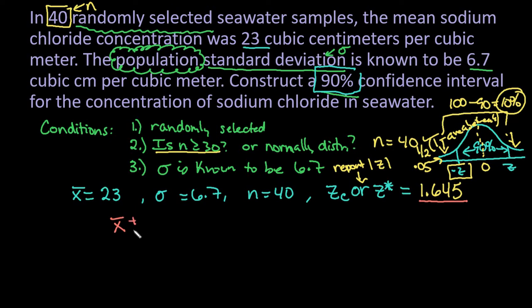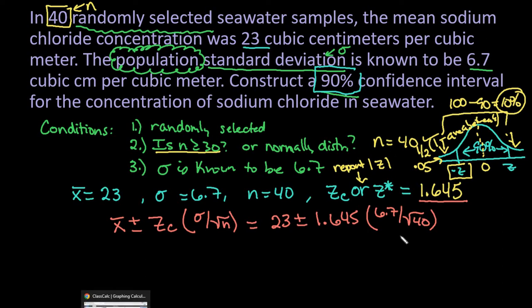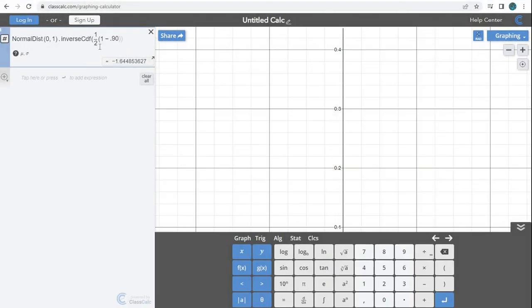So the formula, and you can separate this out, I just write it together. We're going to take our sample mean plus or minus our z_c times sigma divided by the square root of n. So I would just plug in all my values. If you need to show the work, this would be showing the work. You would take your 23 plus or minus your 1.645 times 6.7 divided by the square root of 40. So what we can do instead of having to plug both this expression into our calculator and getting a rounded version, because the 1.645 we saw was already rounded, we had to round that value. What we can do is we can go into our ClassCalc.